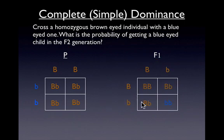When we do that, you see here that all of a sudden we get three brown-eyed individuals and one blue-eyed individual. Getting back to our original question, it says what is the probability of getting somebody with blue eyes?